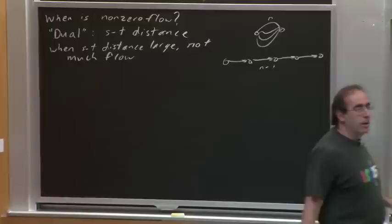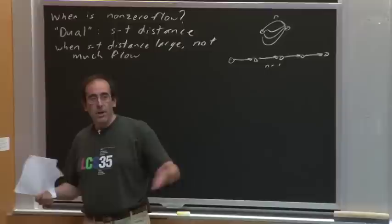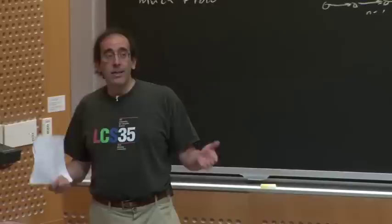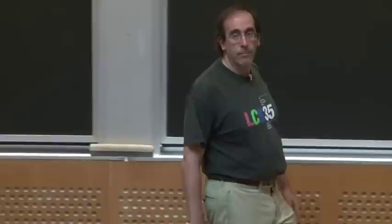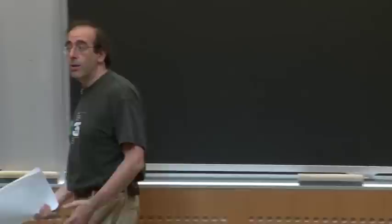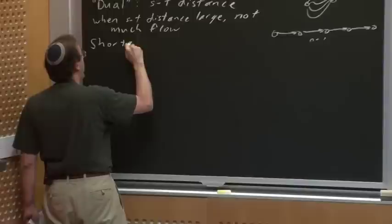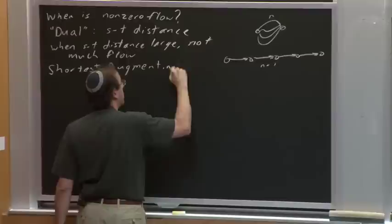We've been working with augmenting path algorithms: find a path that can carry some flow, push flow along that path. Last time we looked for an augmenting path of maximum capacity. If our goal is to make s and t very far apart, we want to destroy short paths. What kind of augmenting path should we look for? If we find an augmenting path and destroy it by sending flow along it, we want to destroy short ones to increase the distance. This leads us to the shortest augmenting path algorithm.